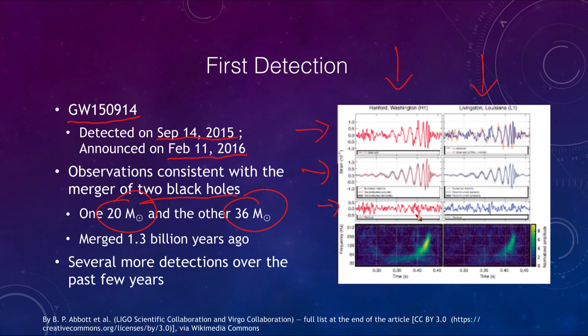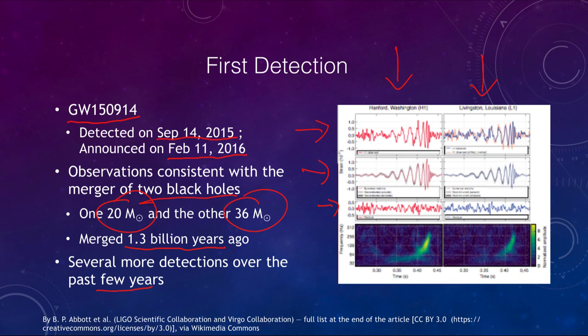This gives us good confidence that our model fits the observations. These black holes would have merged 1.3 billion years ago, in a galaxy over a billion light years away, and those gravitational waves, traveling at the speed of light, took that long to reach us. There have now been a number of further detections made over the last few years. Most of what has been detected so far is from black hole mergers, but we have also been able to detect neutron star mergers as well.